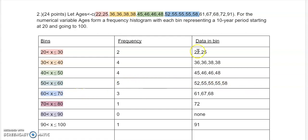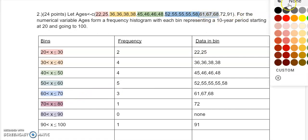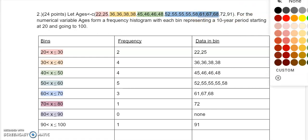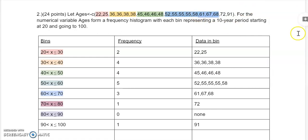Then, from 60 to 70. Well, there's going to be 61, 67, 68. Those ones. It's 3 of them. So there's 3 of them. So you say frequency 3.